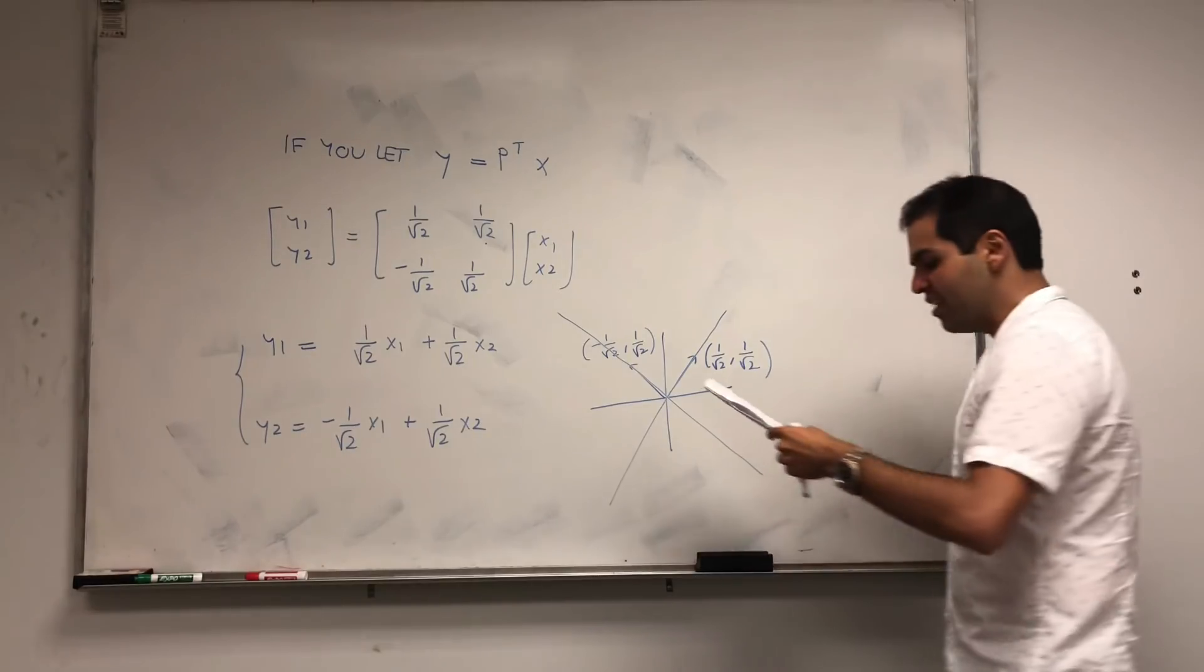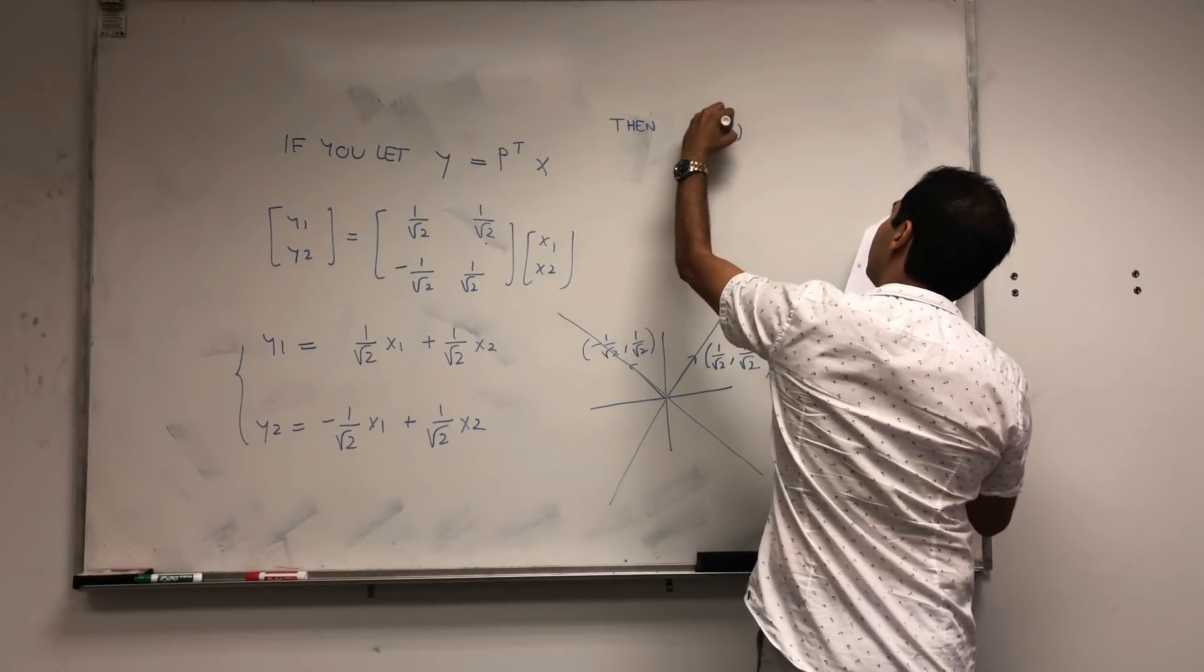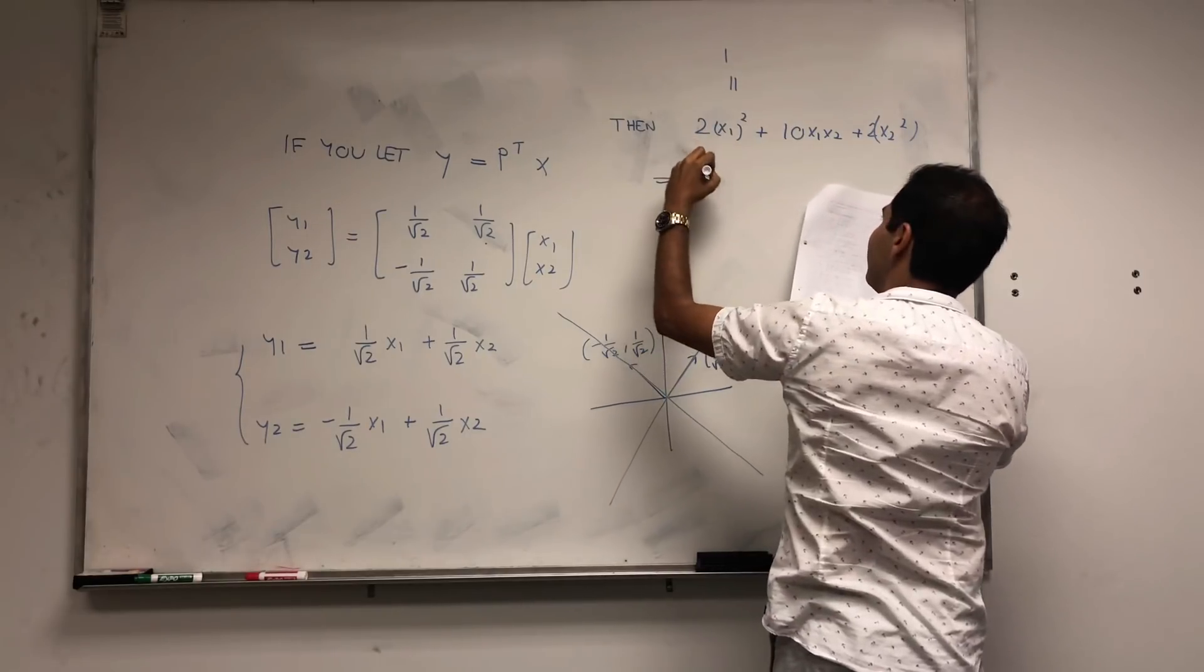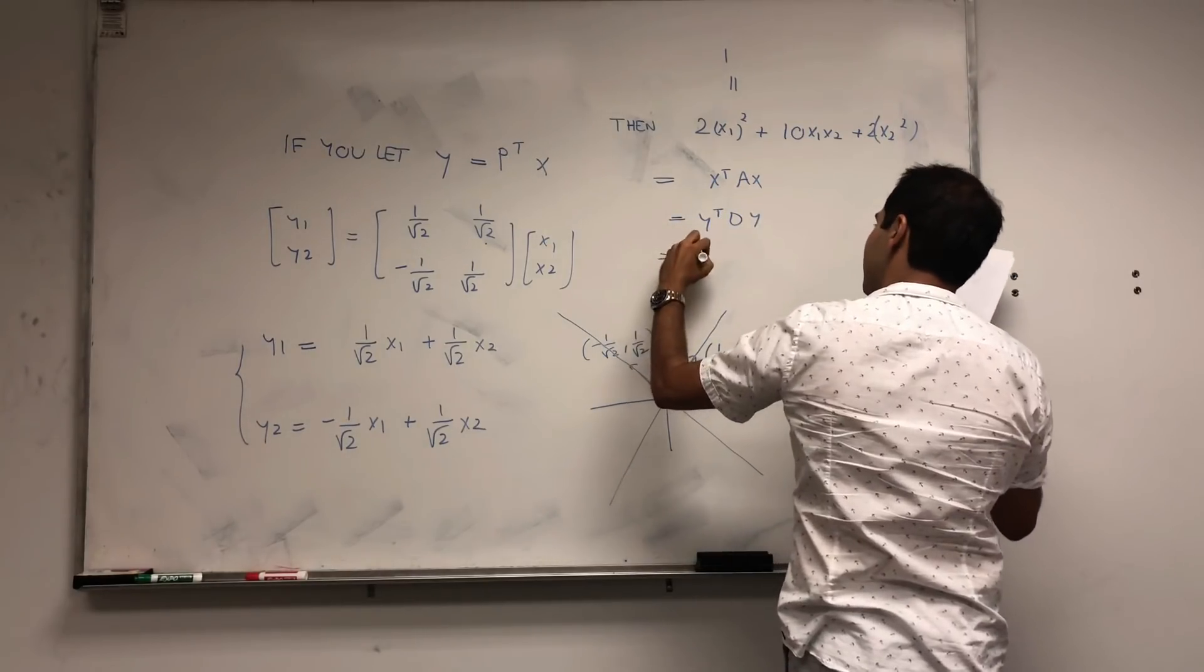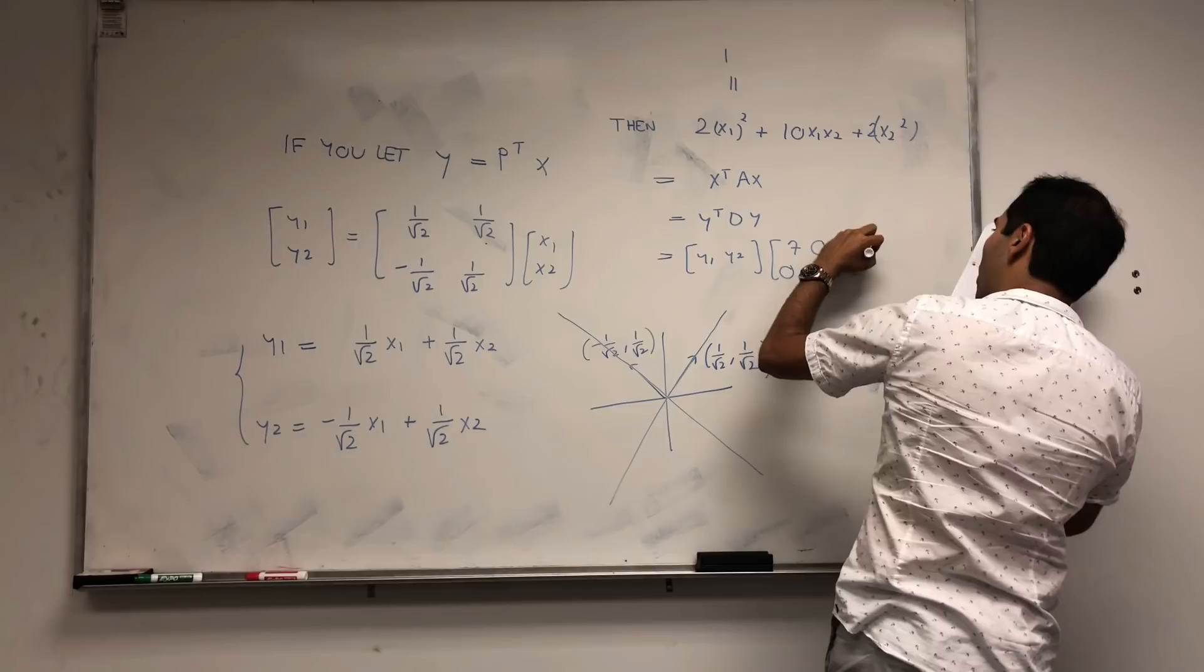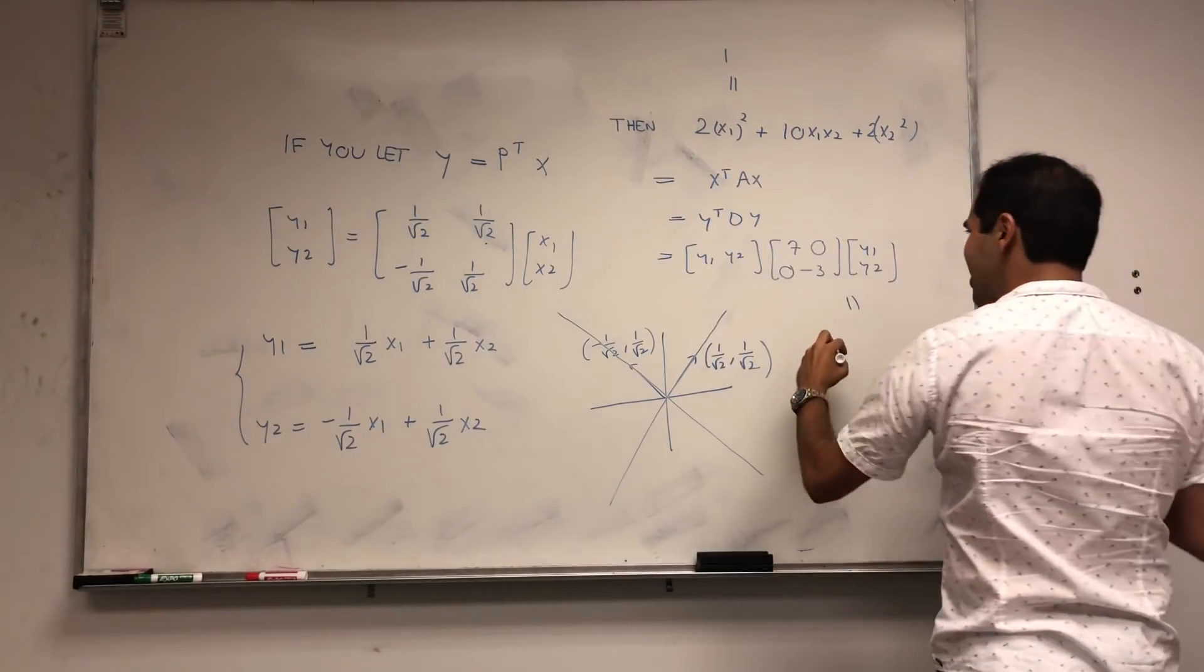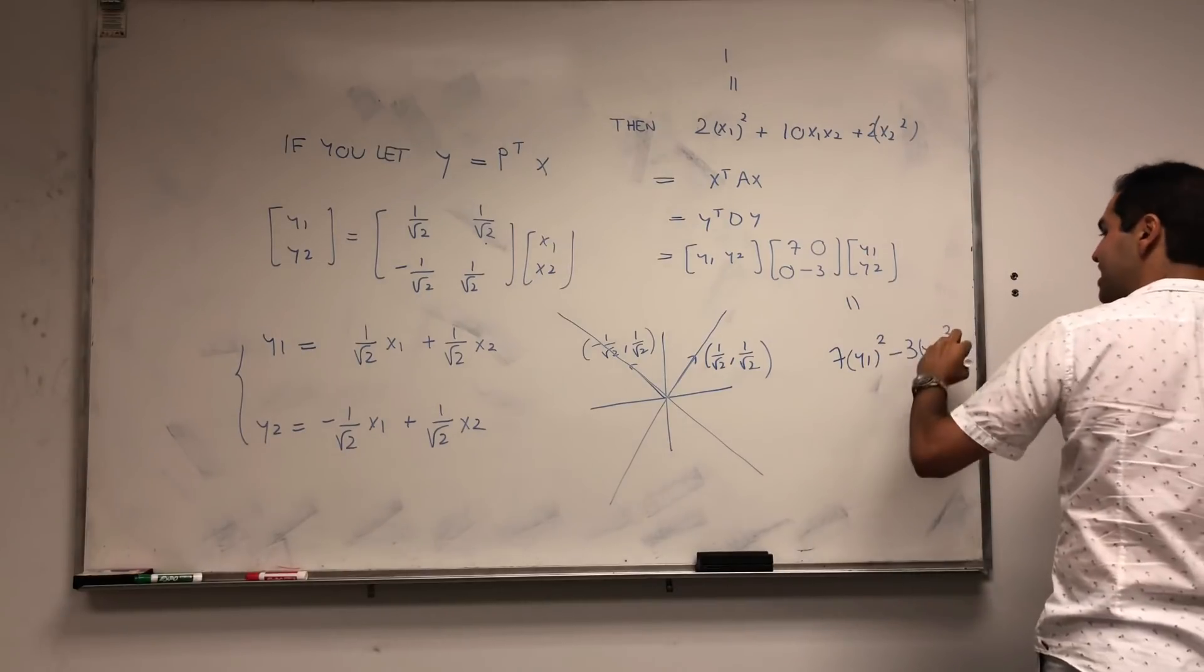Then our quadratic form, our original thing 2X1 squared plus 10X1X2 plus 2X2 squared, is equal to 1. But that's the same thing as X transpose AX, which is Y transpose DY, which is Y1, Y2 times 7, 0, 0, minus 3, times Y1, Y2. In this new coordinate system Y1 and Y2, our quadratic form or our equation just becomes 7Y1 squared minus 3Y2 squared equals to 1.